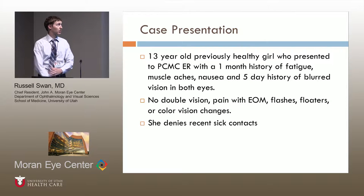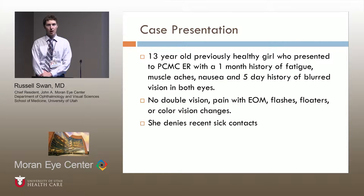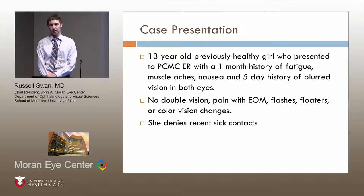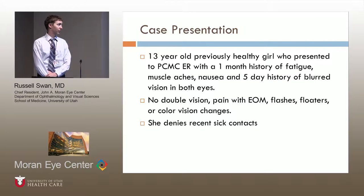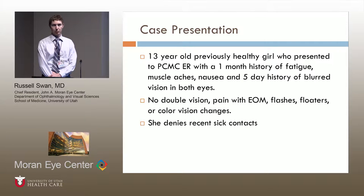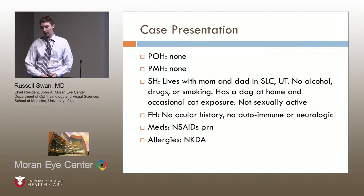My case is a 13-year-old patient who was previously completely healthy, who presented to Primary Children's Hospital with approximately a one-month history of fatigue, muscle aches, nausea, and five days of bilateral diffuse blurry vision. She didn't report any double vision, pain with eye movements, flashing lights or floaters, and otherwise just had diffusely blurry vision.